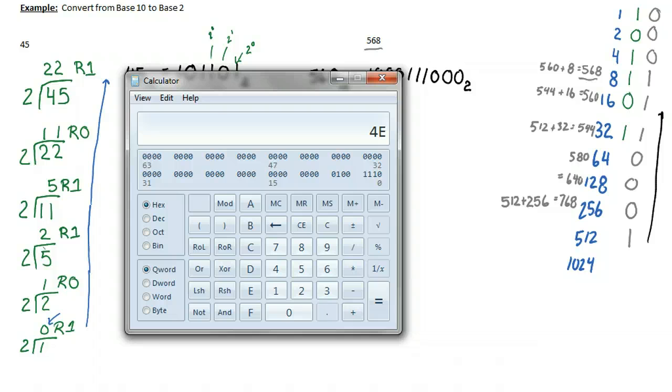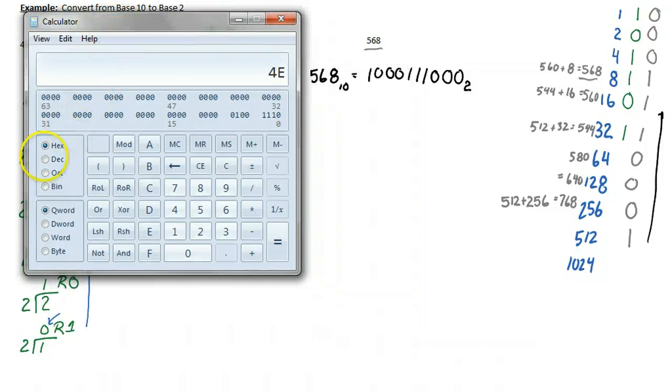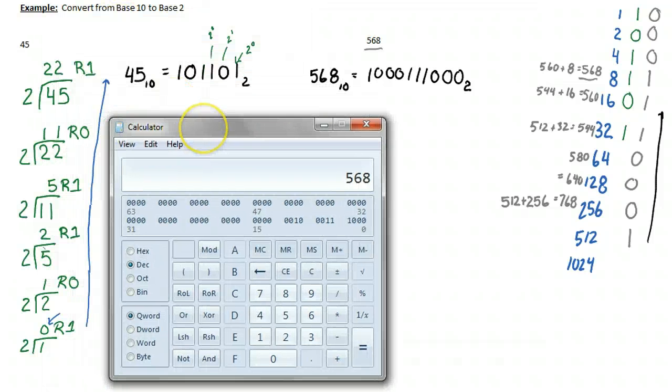And I can always pop up my calculator. And let's go from binary, so 1, 0, 0, 0, 1, 1, 1, 0, 0, 0, and then convert to decimal, and there you go, 568.